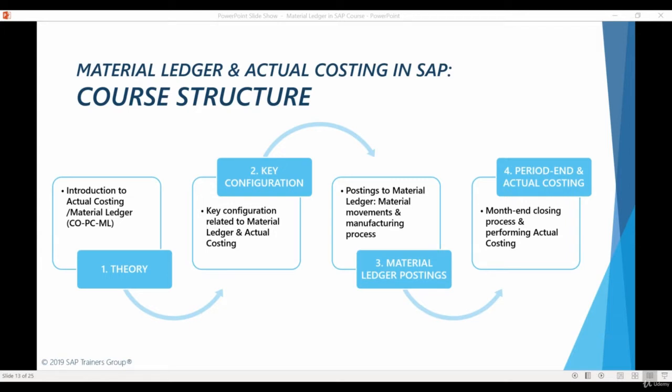During this chapter, we will see how the system is posting material ledger documents after materials are purchased, transferred, and consumed. You will finally see how the system is recording the price differences that we spent so much time talking about during the introduction chapter of this course.